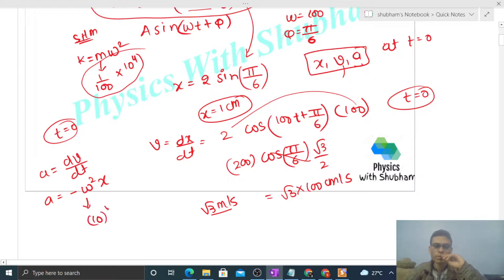So ω² times x value, we already calculated x is 1 centimeter, so you can write it as 1/100 meter. This gives 100 meters per second squared.